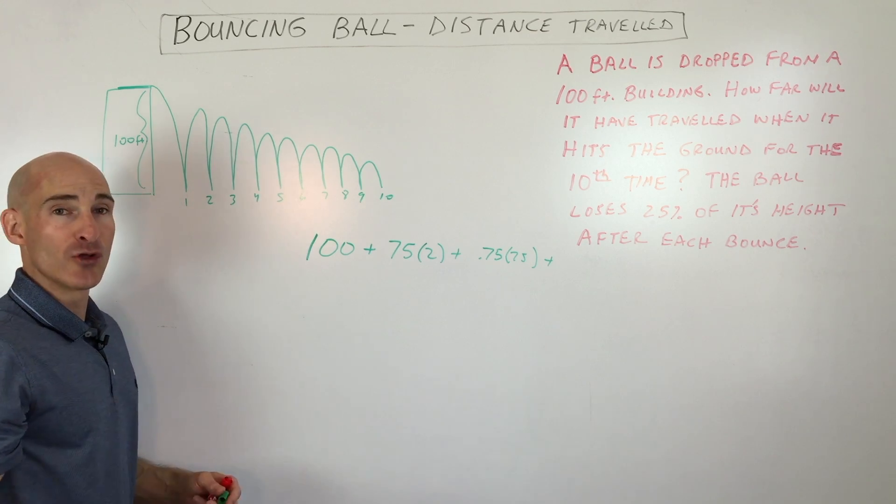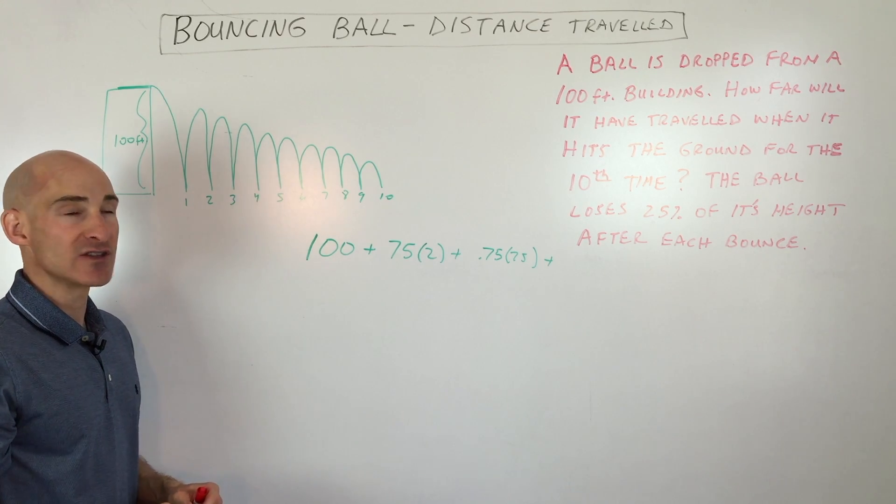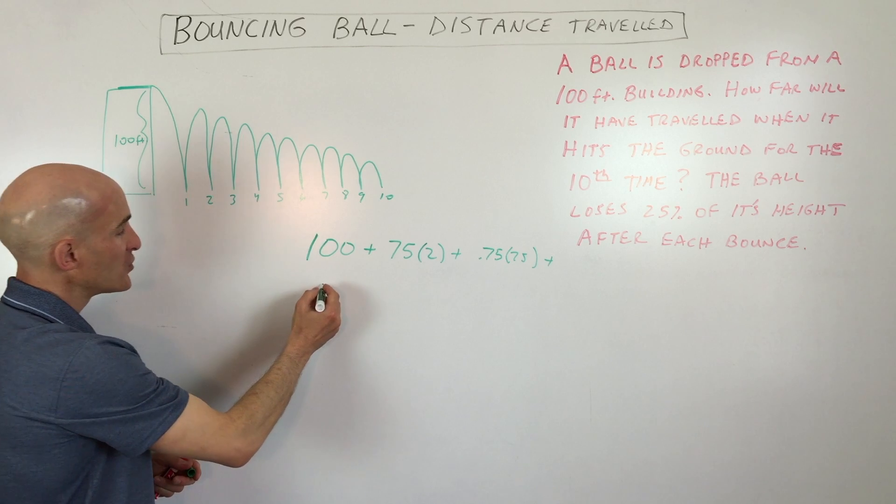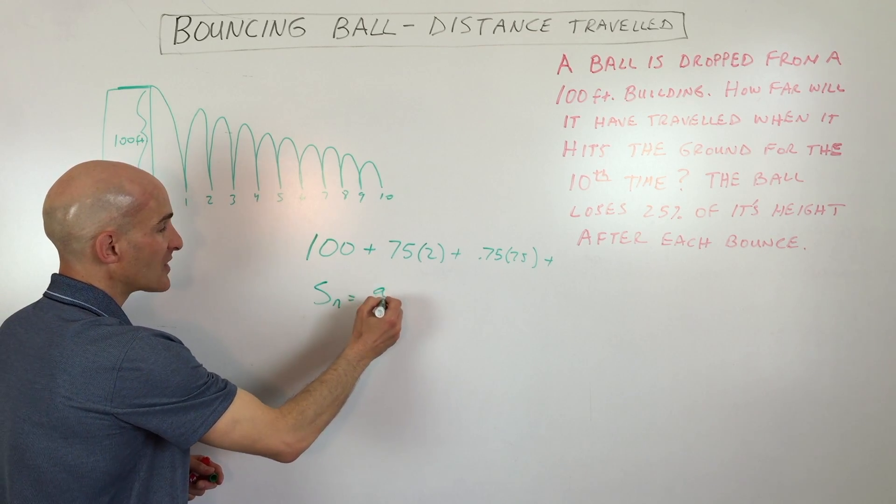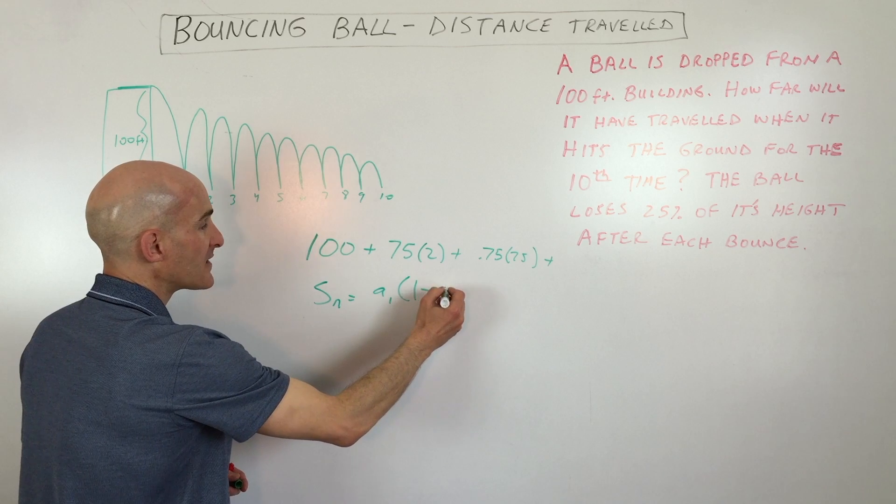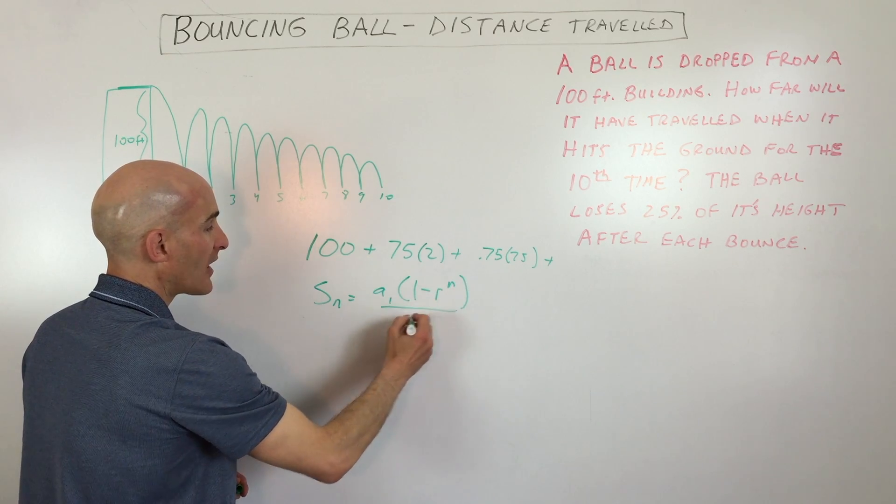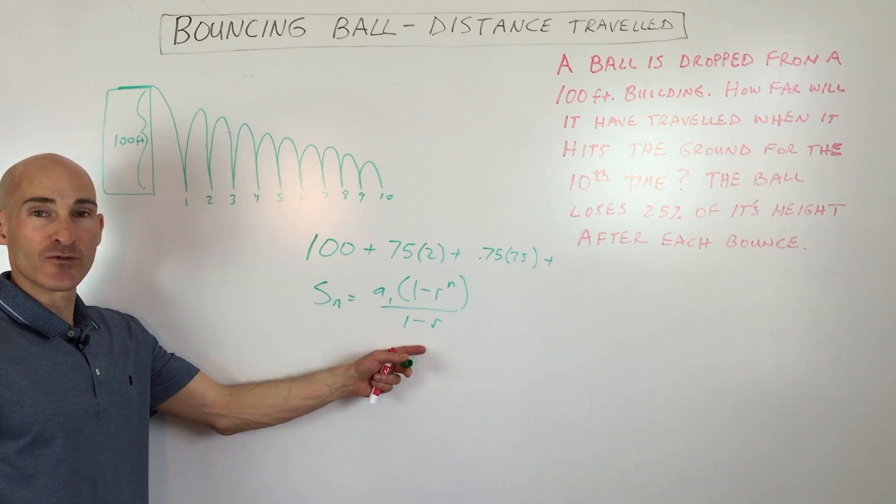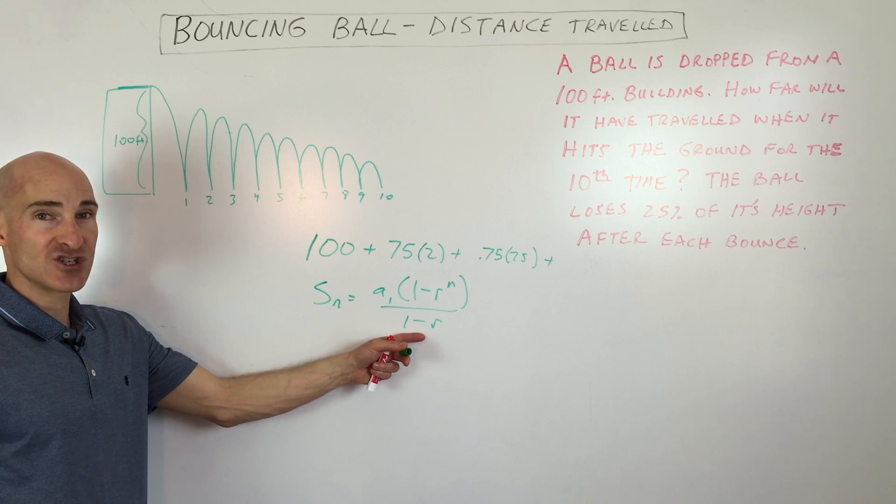Okay, and we're going to add up all those terms in the sequence. That makes it a series. And the way we're going to do this is we're going to use the formula S sub n equals A sub 1, 1 minus r to the n, all divided by 1 minus r. So this is the formula you want to use when it's a finite geometric series.